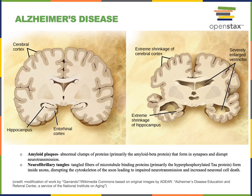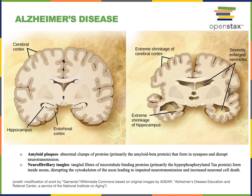Alzheimer's disease is a neurodegenerative disease characterized by memory impairments, confusion about time or place, difficulty planning and executing tasks, poor judgment, and personality changes. It is the most common form of dementia and is strongly associated with age — about 80% of patients are over 75 years of age. However, there is an early-onset form of Alzheimer's disease that can affect people in middle age, in their 30s and 40s.